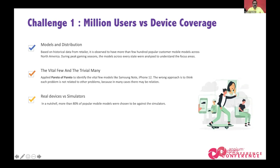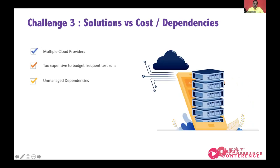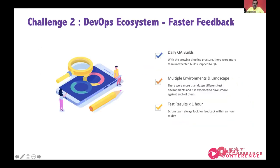On daily QA builds, we sometimes got three builds a day, sometimes one — too many builds across multiple environments to handle. We didn't know when requests were coming from each environment, so we truly needed multiple hubs to handle different services. We had to scale up really well because of the unpredictable request patterns.